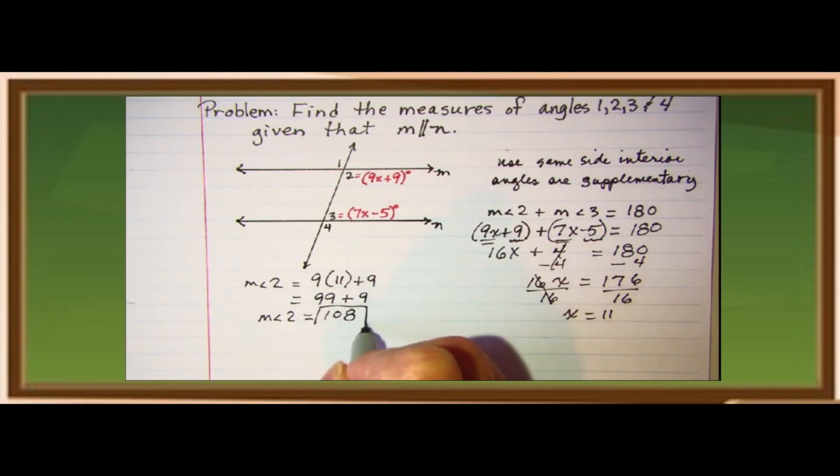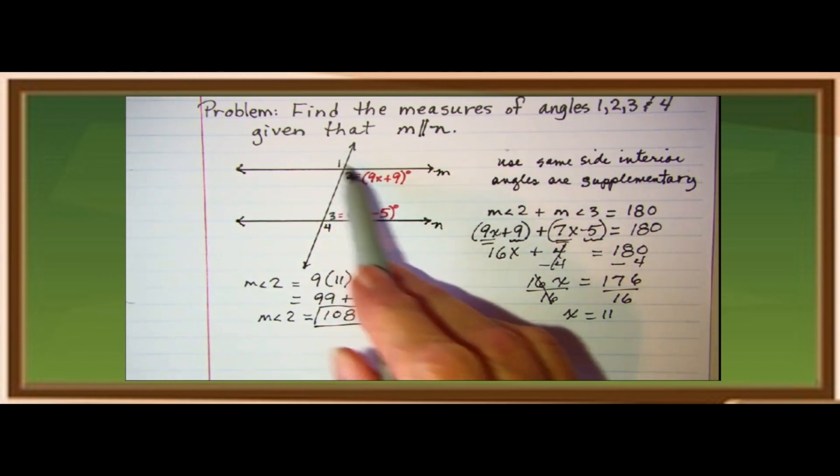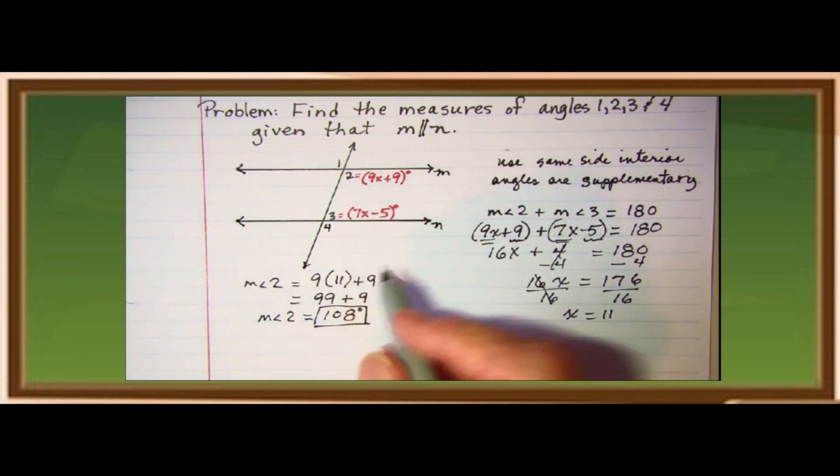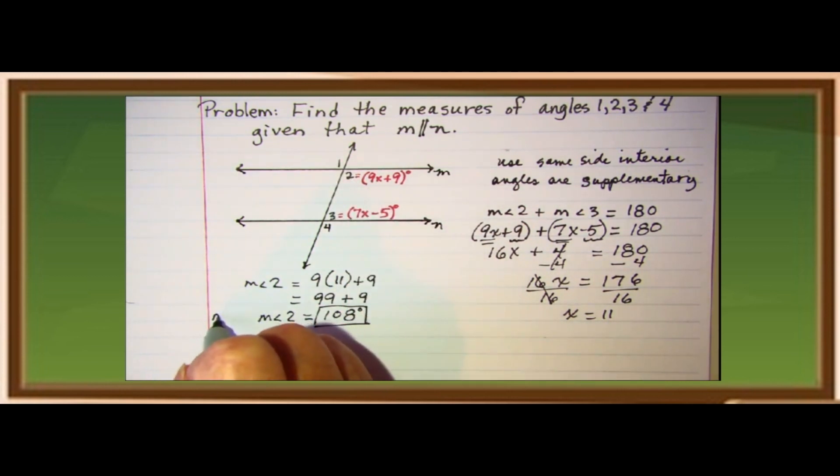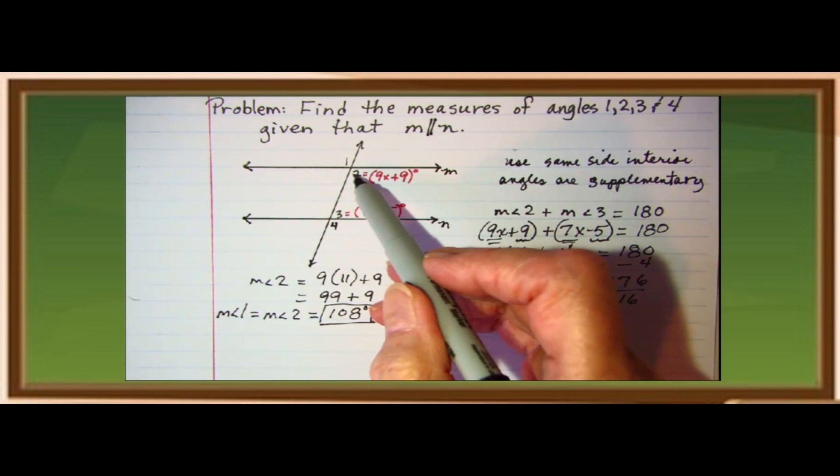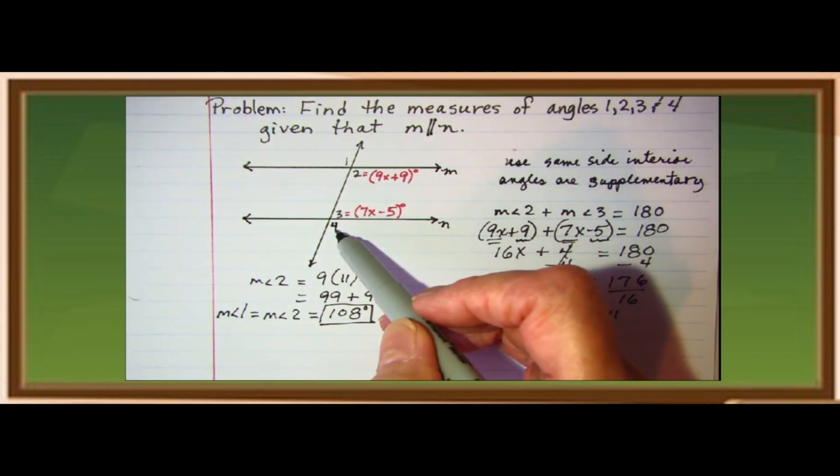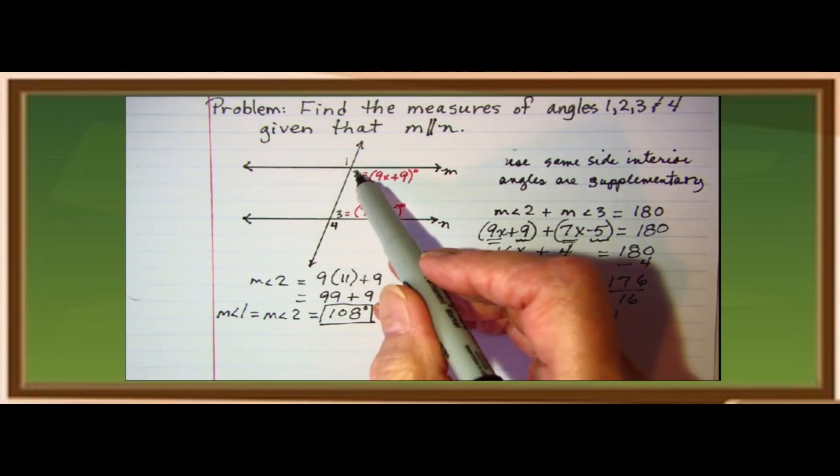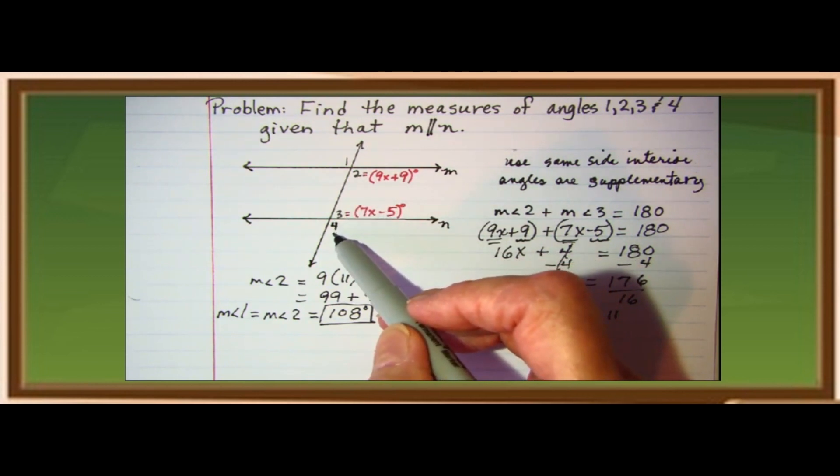So, that is now the value or the measure of angle two, which is also congruent to angle one, because angles one and two are vertical angles. So, therefore, angles one and angles two are congruent angles. If measure of angle two is 108, therefore, measure of angle one is also 108. Okay, the relationship of angles one and two are vertical angles.